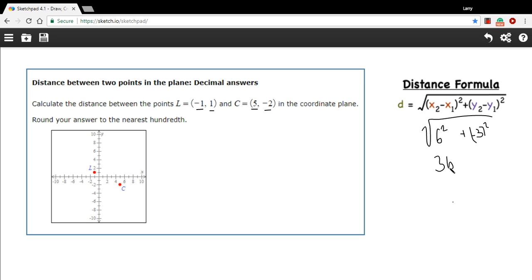6 squared is 36, and negative 3 squared is 9. 36 plus 9 is 45.